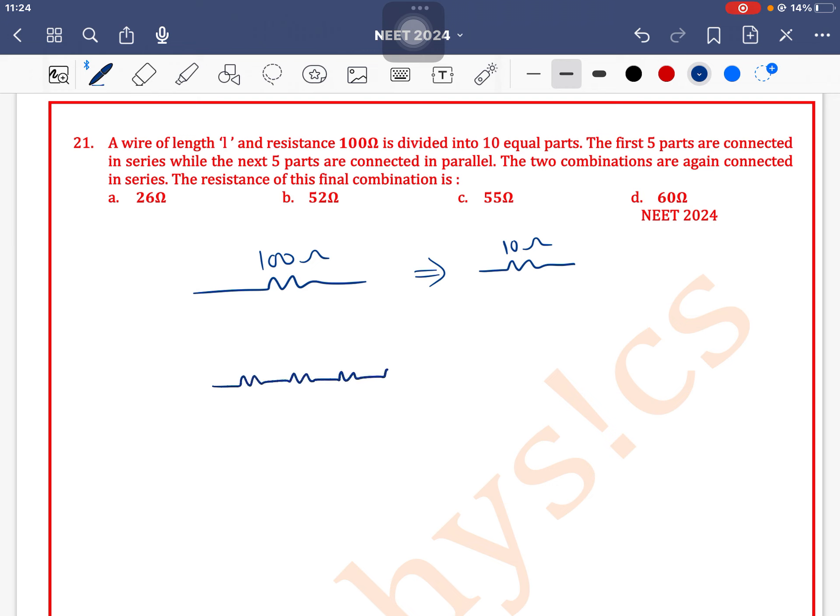Parts 1, 2, 3, 4, 5 are connected in series, and the next five parts are connected in parallel. This combination is connected in series. Now finding the equivalent resistance: each resistance is of value 10 ohm, so for this series combination, 10 plus 10 plus 10 plus 10 plus 10 equals 50 ohm.